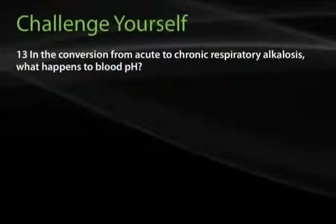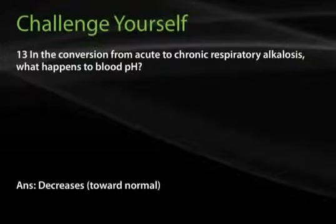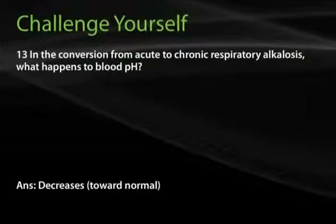Question 13: In the conversion from acute to chronic respiratory alkalosis, what happens to blood pH? The answer is it decreases. As renal compensation occurs, plasma bicarbonate concentration continues to fall and pH returns closer to the normal range.